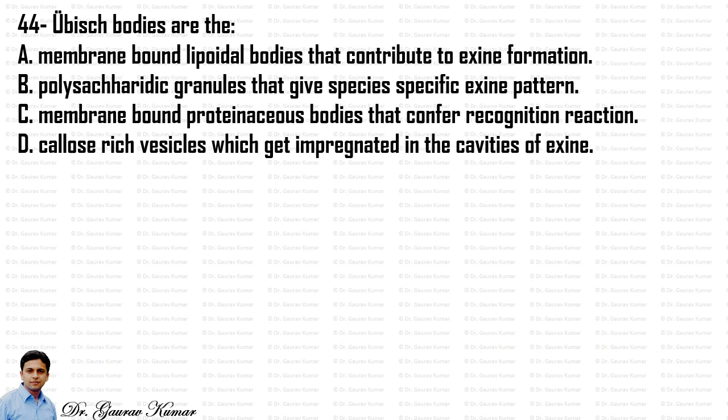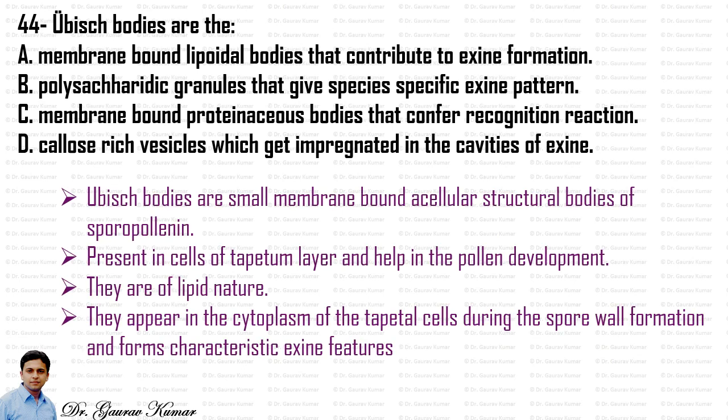Ubisch bodies are small membrane-bound acellular structural bodies of sporopollenin present in the cells of the tapetum layer, and they help in pollen development. They are of lipid nature and appear in the cytoplasm of tapetal cells during spore wall formation, forming characteristic exine features. So the answer is that Ubisch bodies are membrane-bound lipoidal bodies that contribute to exine formation.